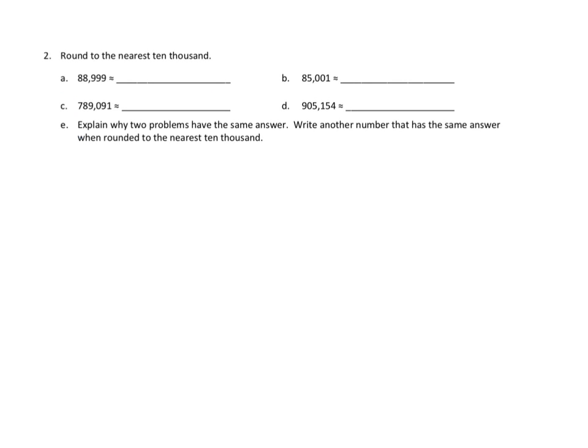Let's take a look at one more problem. Problem number two says we are going to round to the nearest 10,000. Let's take a look at C again. We're going to look at 789,091, and we are rounding to the nearest 10,000. We know that there are 78 ten-thousands here, and just above that would be 79 ten-thousands. The midpoint is 78 and 5,000, and this is well above that — 78 and 9,000 is above that. So we know this is going to be closer to 79 ten-thousands, or 790,000. That is rounded to the nearest 10,000.